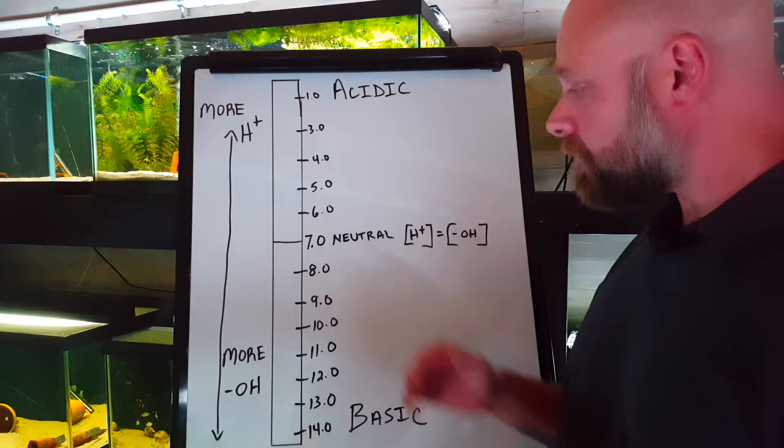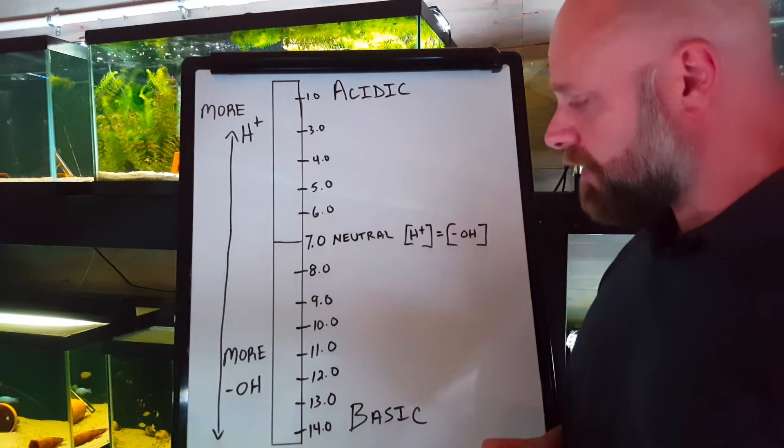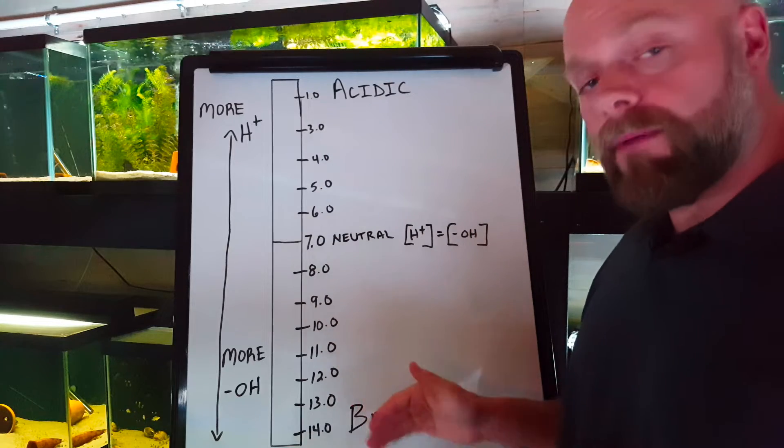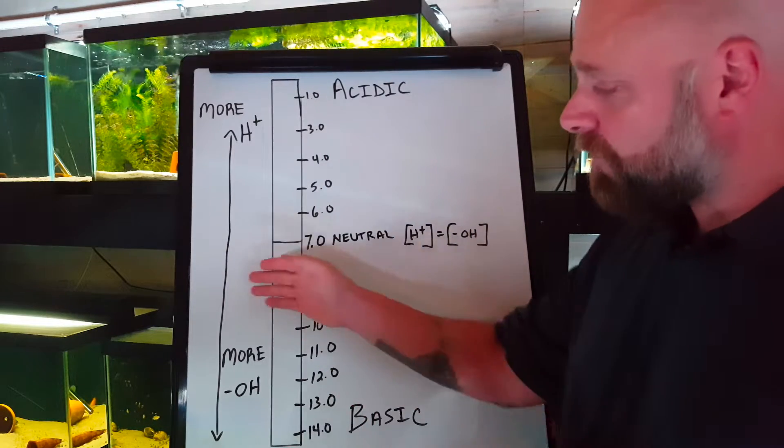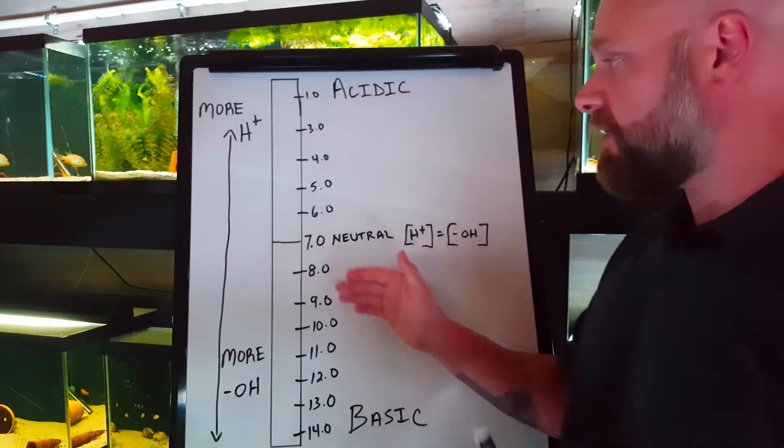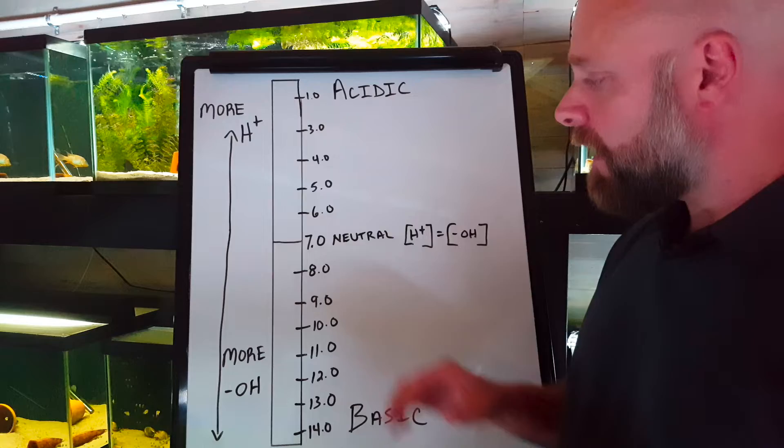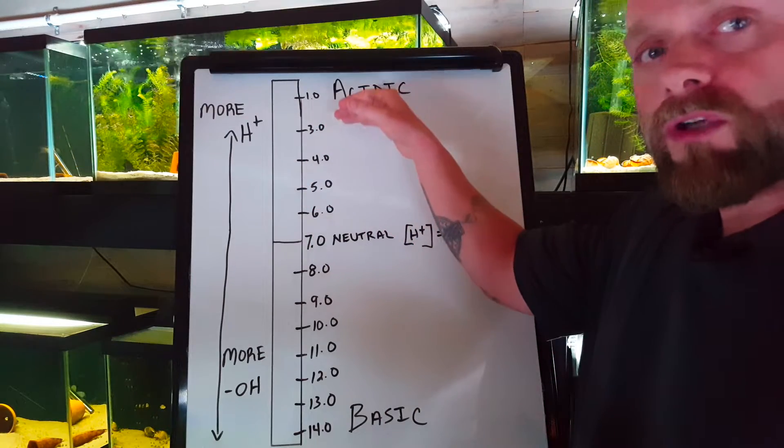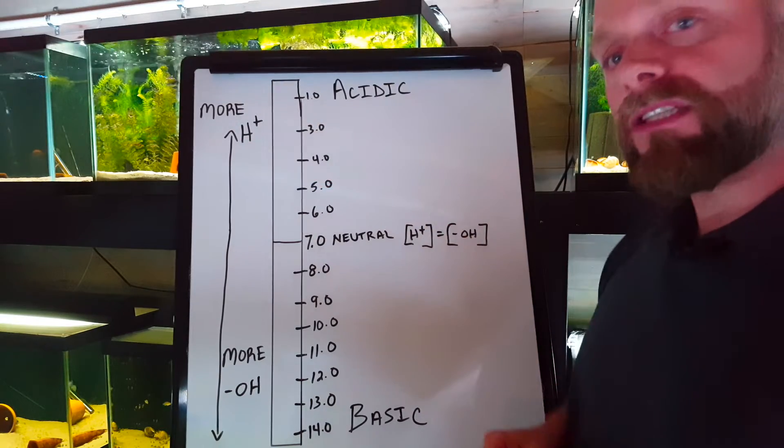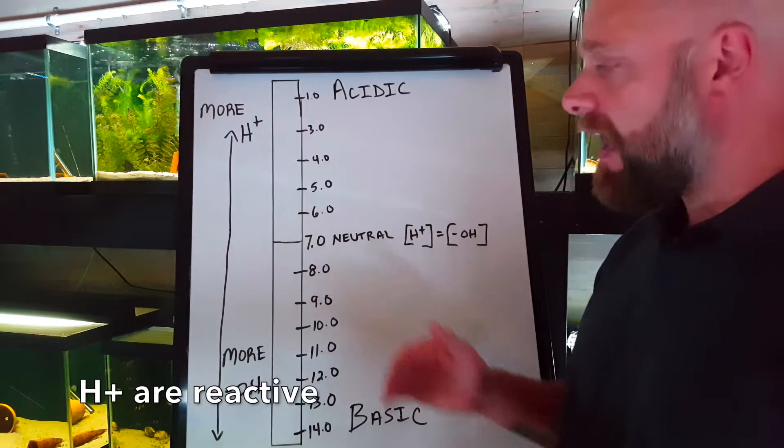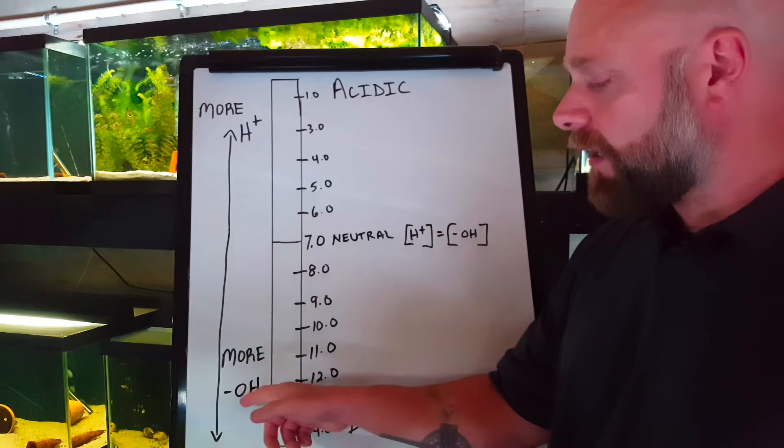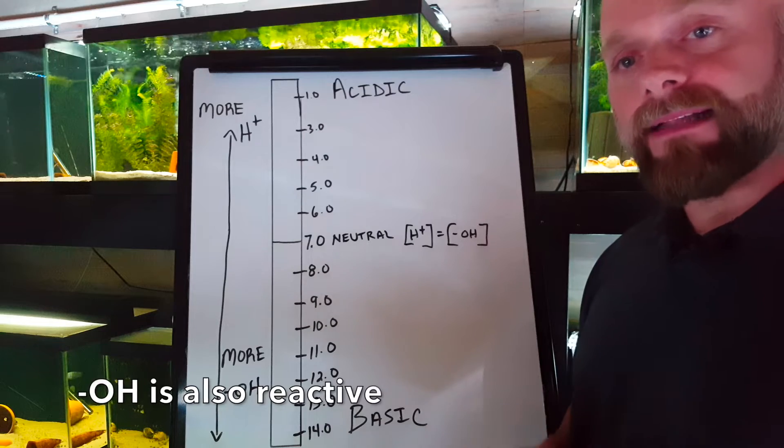Back to our pH scale. We're going from 0 to 14. The smaller the number, the more acidic. The larger the number, the more basic. On the left-hand side, you're going to see how the ions figure into our pH scale. As the number gets smaller, as we get closer to 1 and then to 0, there are going to be more hydrogen ions in that solution. As the number gets larger and we get closer to 14, there are going to be more hydroxide ions in the solution.